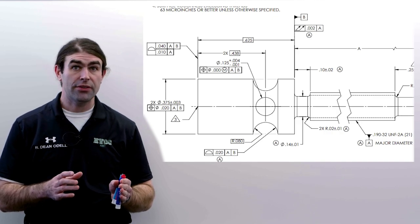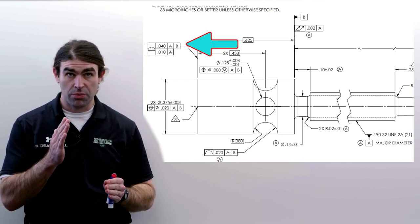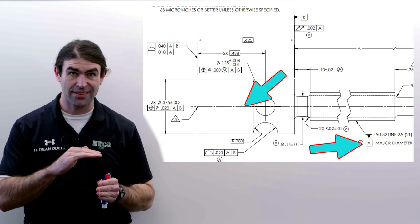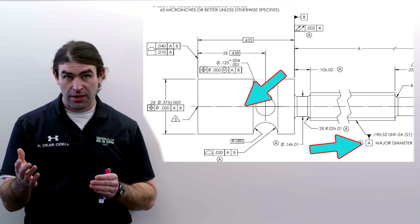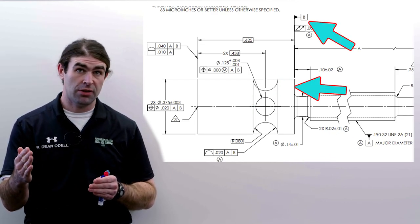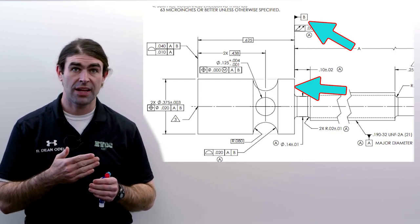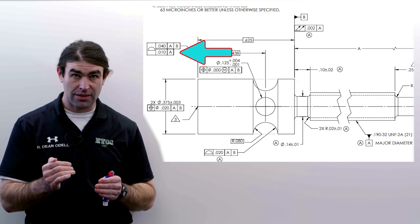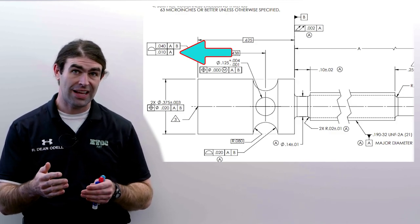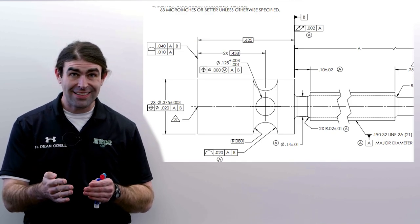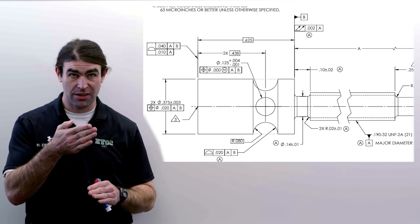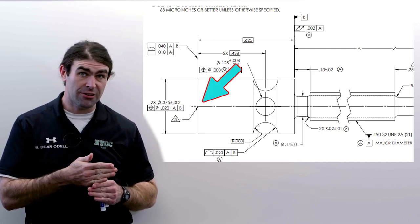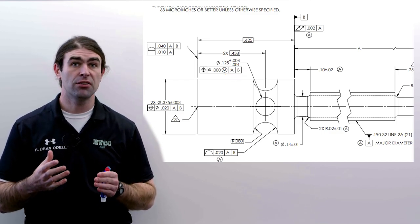The first segment, 40 thousandths to A and B — datum A is controlling the perpendicularity, essentially, of that surface to the datum axis. Datum B is controlling the translation, so the location of that surface from datum B. Now what the second segment does — that 10 thousandths just to A — only controls the orientation to datum axis A. On paper it's shown as being at a right angle to that center line, so that's the only thing it can do.